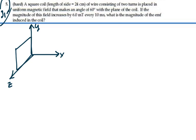Here's our coil, it's 24 centimeters on the side, 0.24 meters. And so the area of this coil is going to be equal to 0.24 meters squared, and that is equal to 0.0576 square meters.